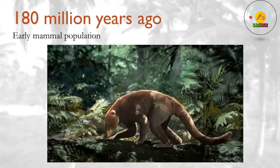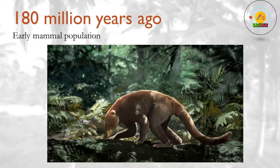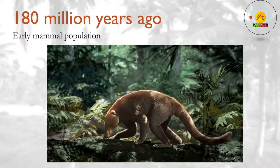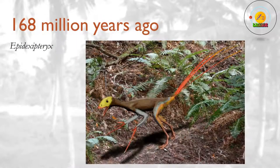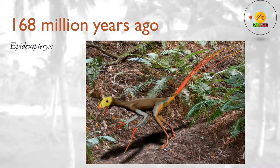180 million years ago. The first split occurs in the early mammal population. The monotremes — a group of mammals that lay eggs rather than giving birth to live young — break apart from the others. Few monotremes survive today; they include the duck-billed platypus and the echidnas. 168 million years ago. A half-feathered, flightless dinosaur called Epidexipteryx, which may be an early step on the road to birds, lives in China.